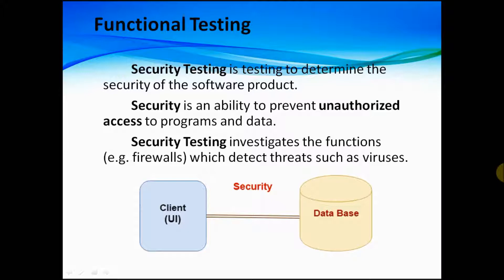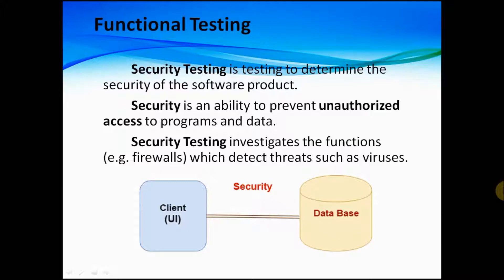Functional testing includes security testing and interoperability testing. Security testing is testing to determine the security of the software product. Security is the ability to prevent unauthorized access to programs and data. Security testing investigates functions such as firewalls which detect threats like viruses. For example, with a client, UI, and database, security is the system's ability to prevent unauthorized access to the database. Different applications will have different levels of security — for example, a government application will have higher security than an enterprise application.